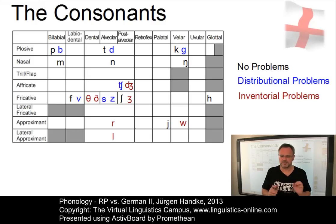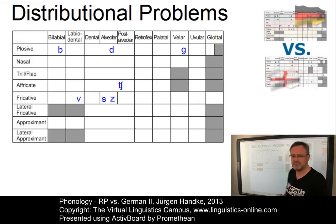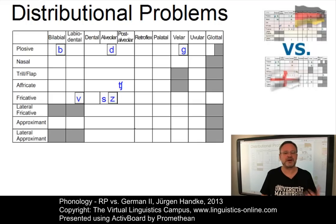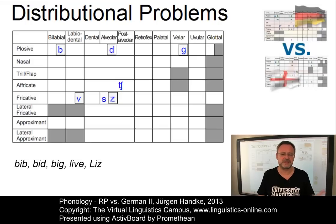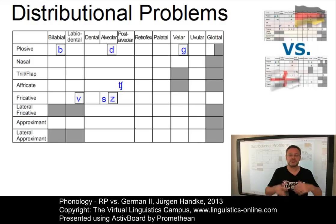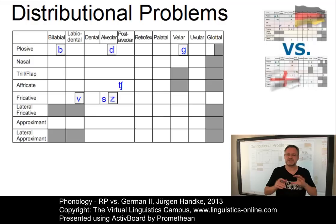The remedial actions for problematic phonemes depend on the type of problem involved. Let us start with the distributional problems. These phonemes exist in German but have a different distribution. The first group is affected by the phenomenon of final devoicing — they all exist in German but have no voiced allophone in word-final position. To help German learners pronounce words like BIB, BID, BIG, LIVE, and LIS, a good strategy is to make the vowel longer — the auditory effect is almost the same, and the lengthening automatically weakens the subsequent consonant.